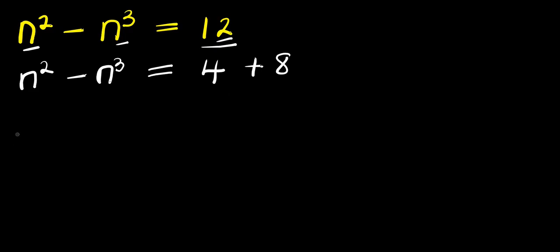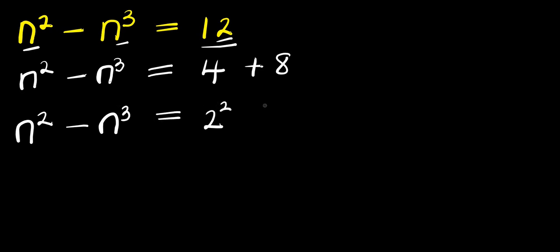From here, I can have n² - n³ equals 4, which is simply 2², plus 8, which is simply 2³.